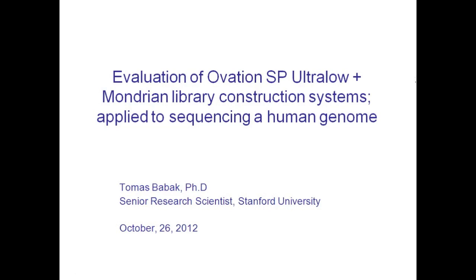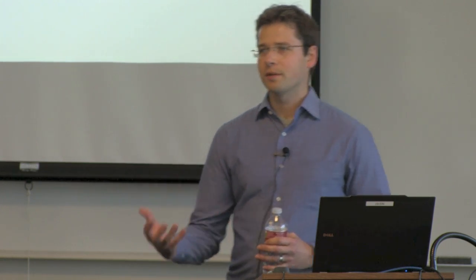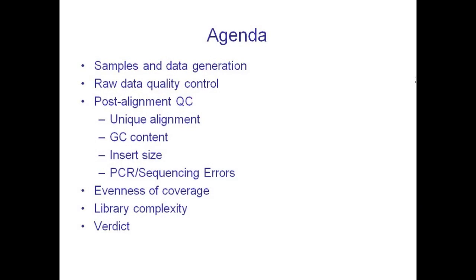My name is Thomas Babich, and today I'll talk about an analysis that I did for an evaluation of Ovation SP Ultra Low, a library construction system that was using the Mondrian system as well. The entire analysis is essentially from a bioinformatician's point of view. There's a whole variety of metrics that I really care about and that I think distinguish a good library construction protocol from a bad one, and that's primarily what I will focus on today.